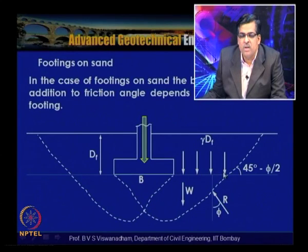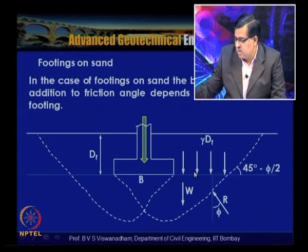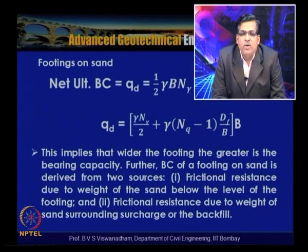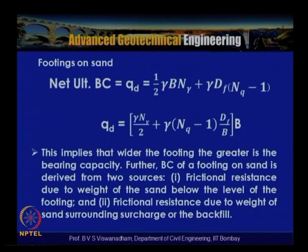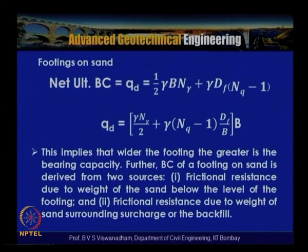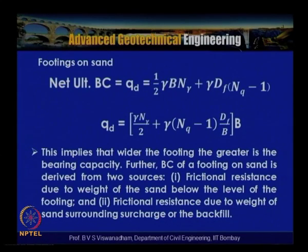The effect of embedded depth is the confinement due to gamma times d_f. For a footing on sand, the net ultimate bearing capacity is: q_d equals (1/2) gamma b N_gamma plus gamma d_f (N_q minus 1). For a continuous footing, this simplifies to q_d equals b times [(gamma N_gamma / 2) plus gamma d_f (N_q minus 1) times (d_f/b)]. This implies that the wider the footing, the greater the bearing capacity.